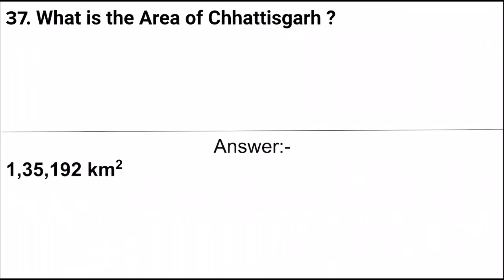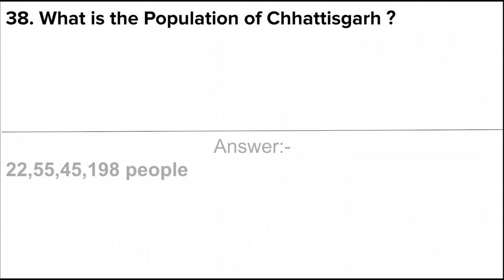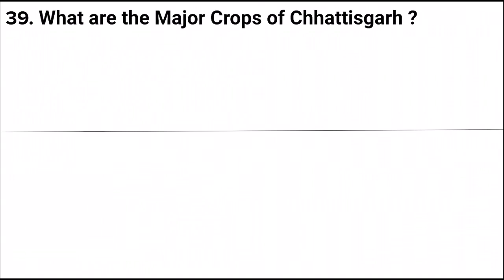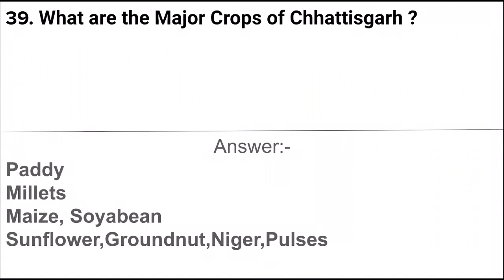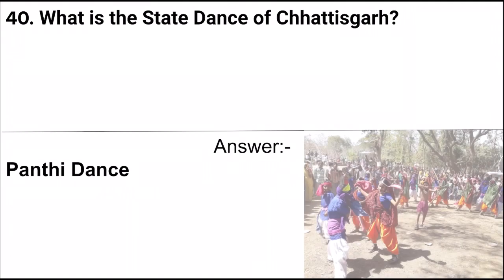Next question: What is the area of Chhattisgarh? Answer: 1,35,192 square kilometers. Next question: What is the population of Chhattisgarh? Answer: 22 crore 55,45,198 people. Next question: What are the major crops of Chhattisgarh? Answer: Paddy, millets, maize, soya bean, sunflower, groundnut, niger, and pulses. Next question: What is the state dance of Chhattisgarh? Answer: Panthi dance.